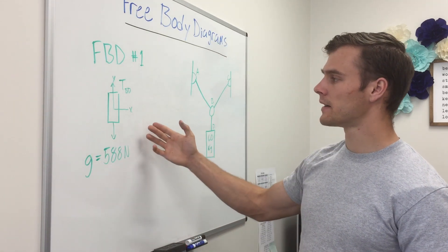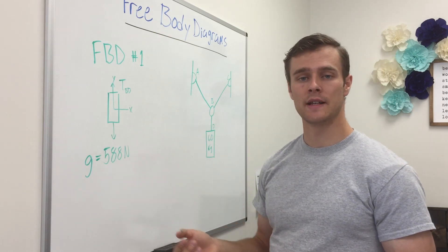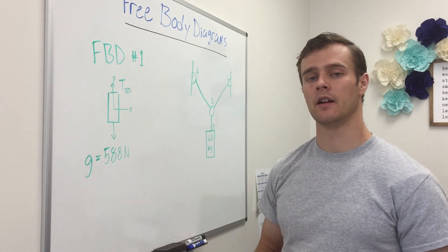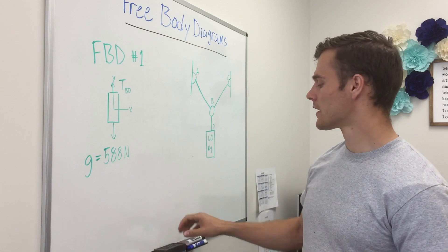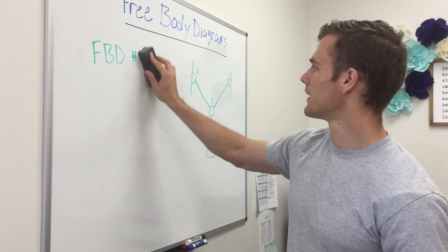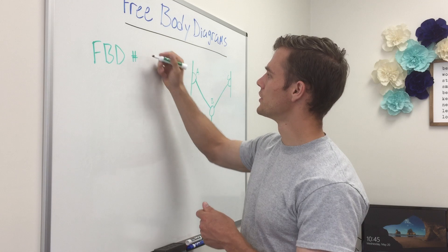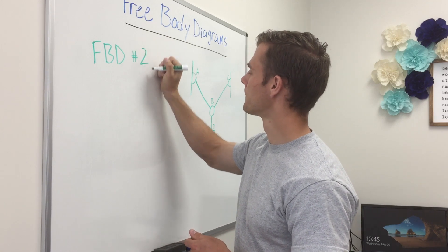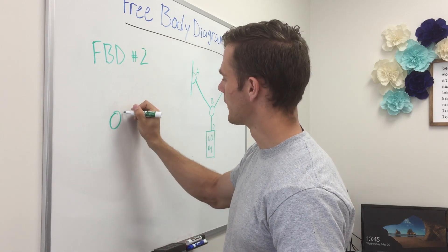So remember that. So that's our free body diagram for that cylinder, it's pretty easy, only has two forces acting on it so it's pretty simple. So let's draw our free body diagram number two for the ring.